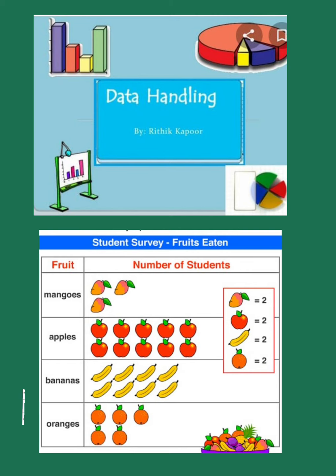For example, can you see fruits, mangoes in the first column? How many mangoes are drawn? Three. One mango is two, so three mangoes means how many? Six, very good. So number of students who eat mangoes, we can check out from this column, mangoes eaten by students is six.